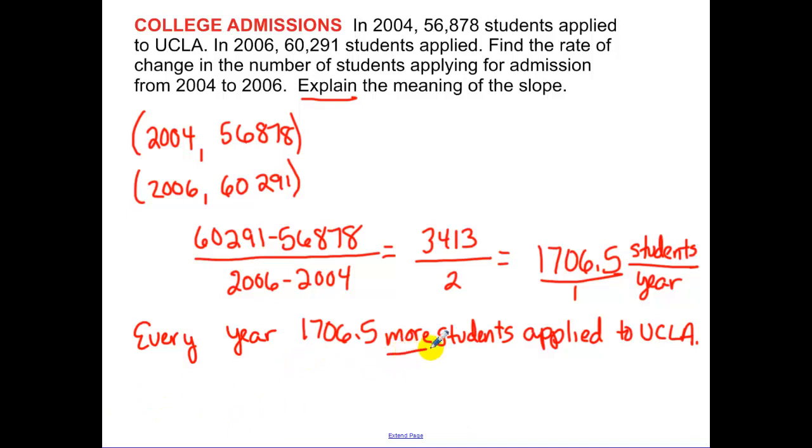The more tells me it's positive. By it, I mean the slope. The more tells me the slope is positive. It tells me that our function is increasing.